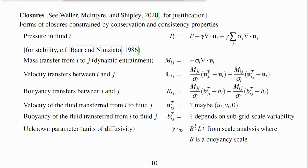The parameter γ in the closure for pressure has units of diffusivity and, by scale analysis, depends on a buoyancy scale to the power half and a length scale to the power three over two.